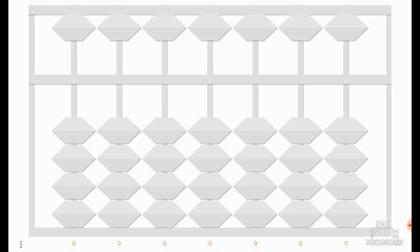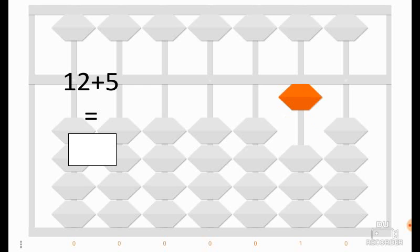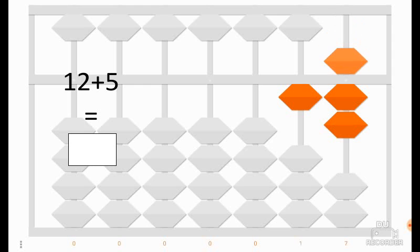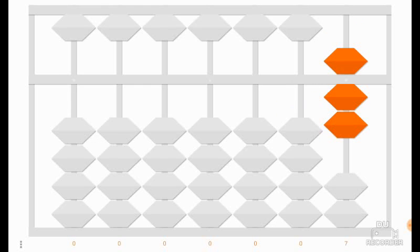We would like to add 12 plus 5. To add these numbers, we write the first number on the soroban. The first number is 12. To add 5, we add 5 coins in the unit column. And we have the result: 12 plus 5 is equal to 17.